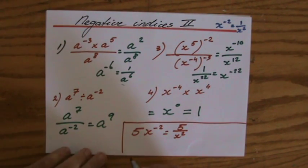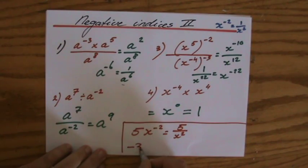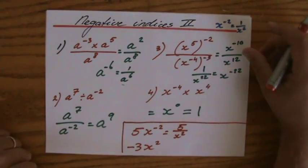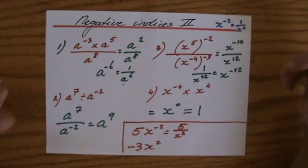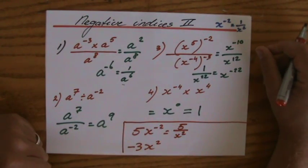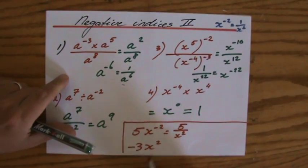And also, please make sure that when it says minus 3x to the power 2, there's no negative index here. It is still minus 3x to the power 2, because the index is positive.